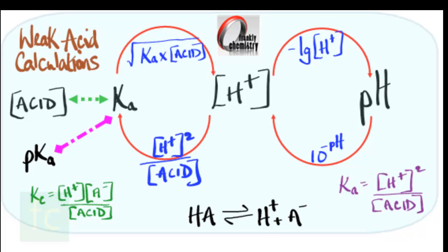From Ka you can also get what's called the pKa value. To get the pKa from Ka you take the negative log to the base 10 of Ka. To get Ka from the pKa, the answer is 10 to the power of minus the pKa. As you go through this video, you'll see lots of examples of that and other calculations in this flow diagram.